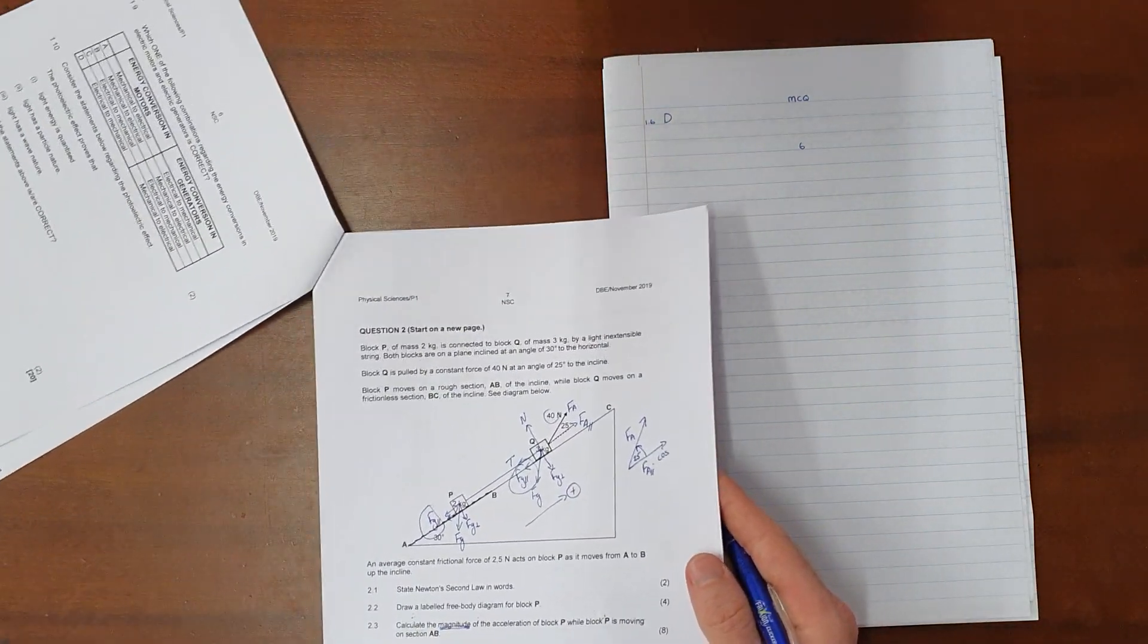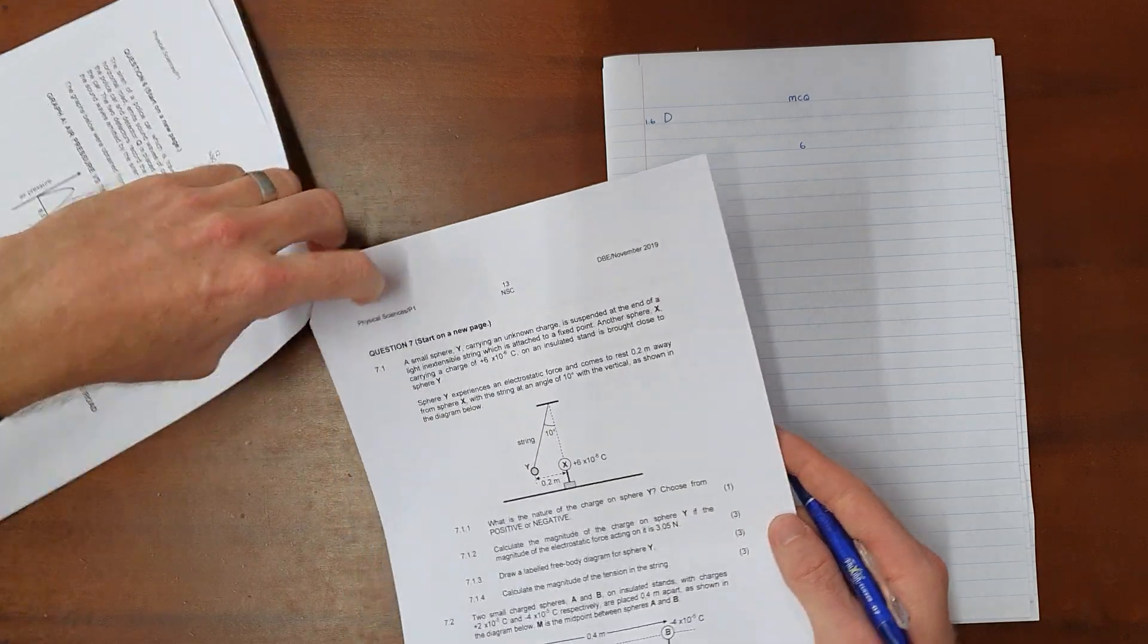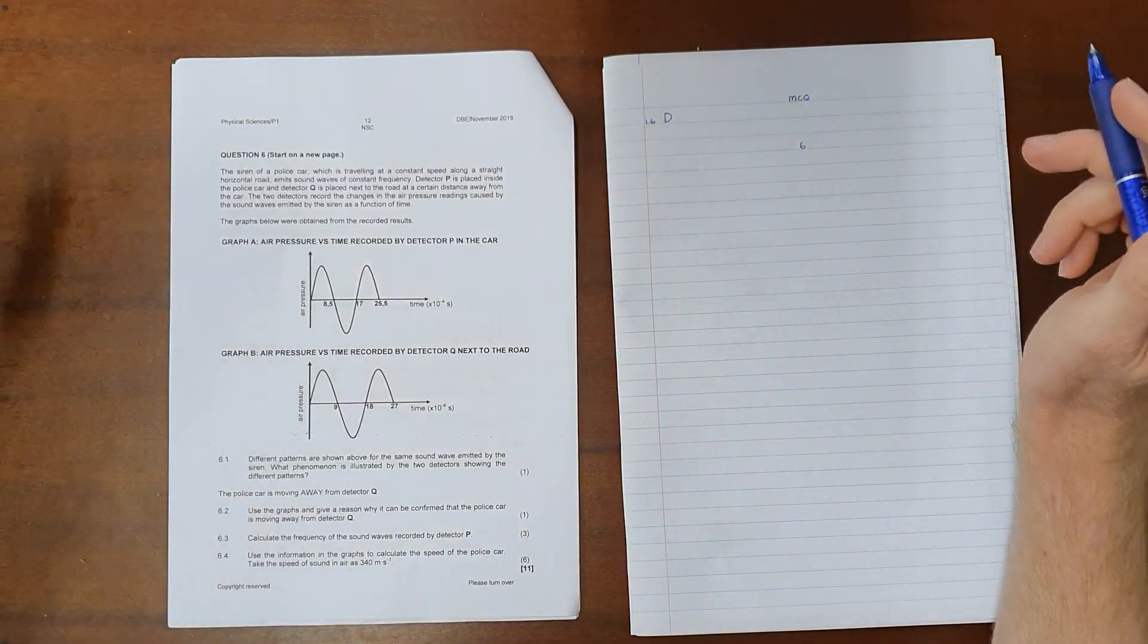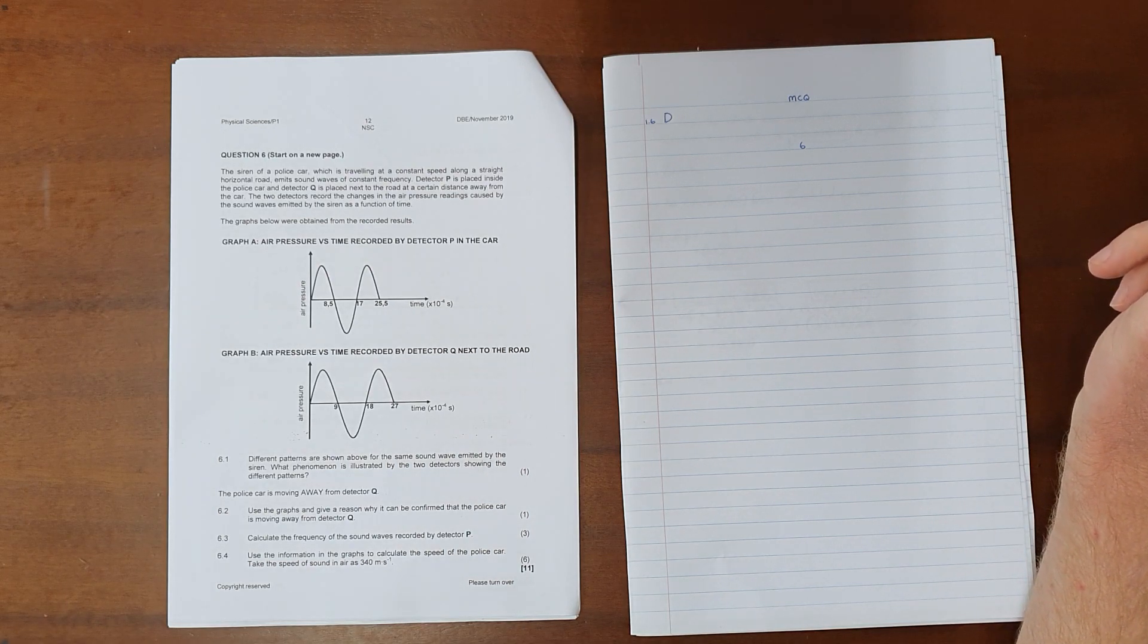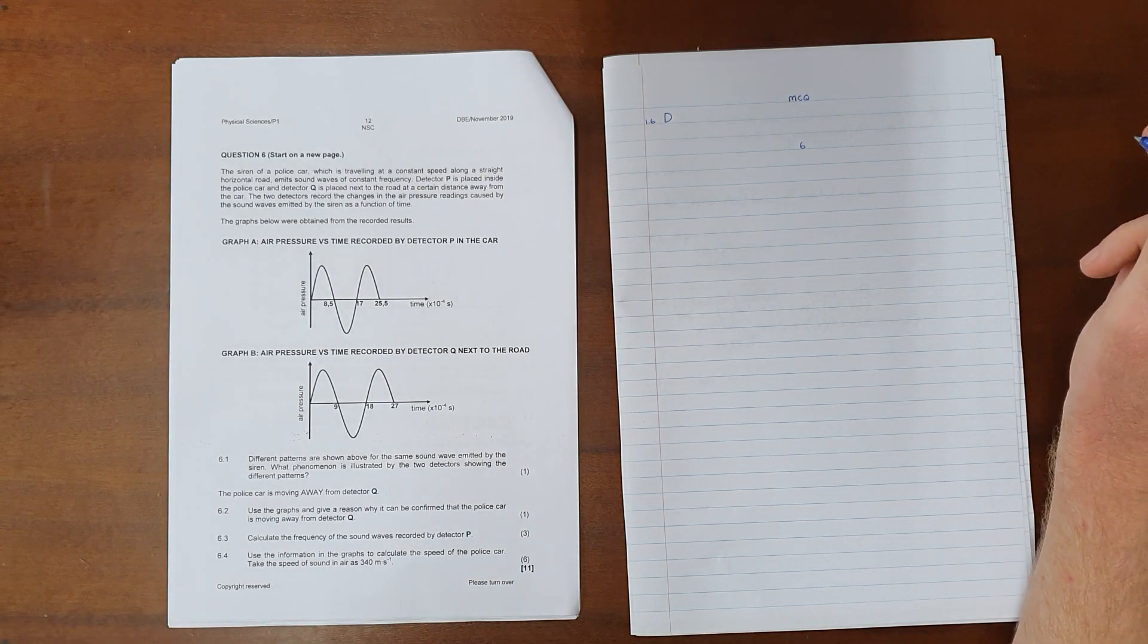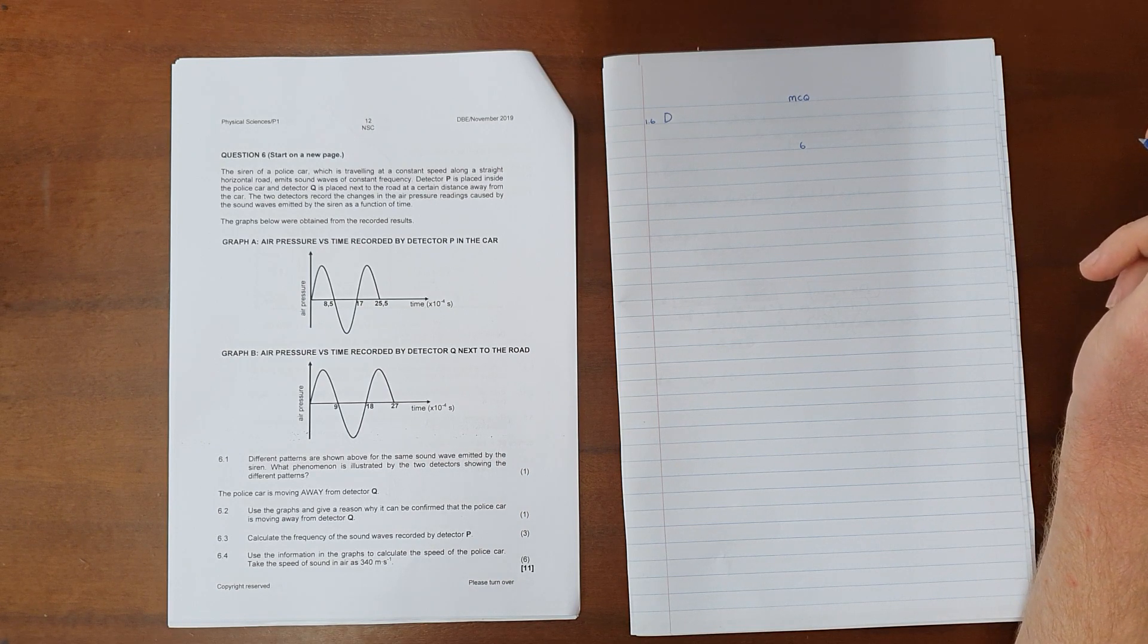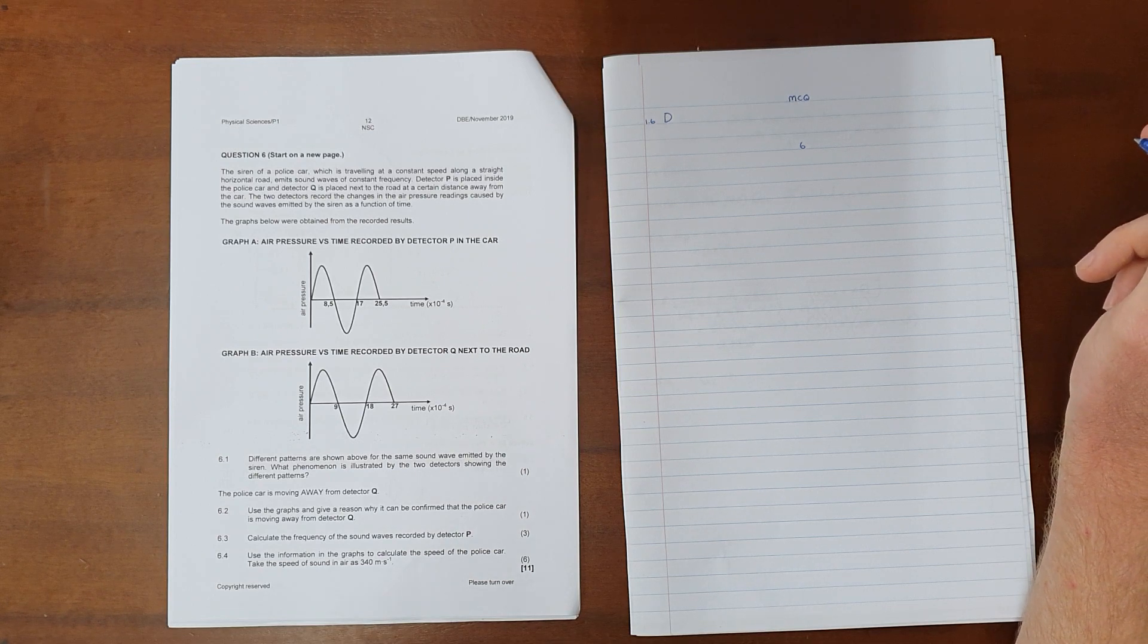Then question 6 in the physics paper is always the question on Doppler effect. Question 6 reads as follows. The siren of a police car which is traveling at a constant speed along a straight horizontal road emits sound waves of constant frequency. Detector P is placed inside the police car and detector Q is placed next to the road at a distance away from the car.